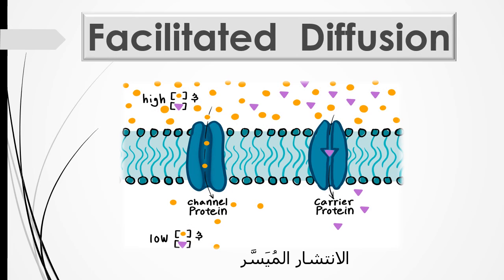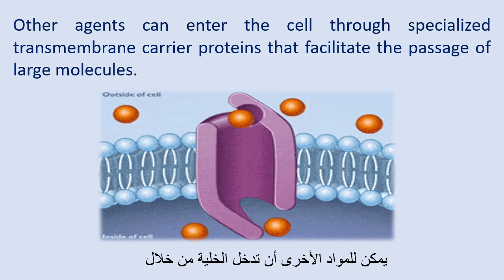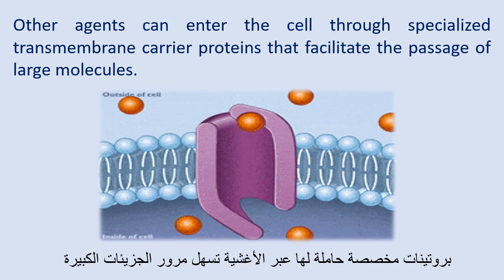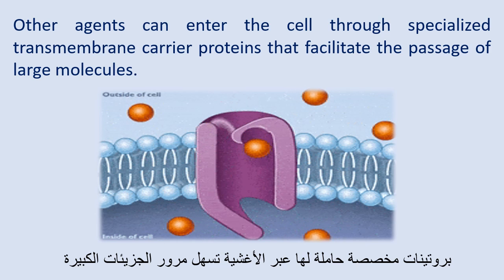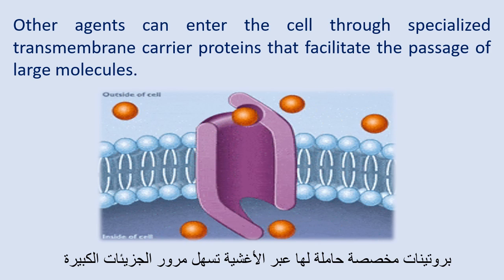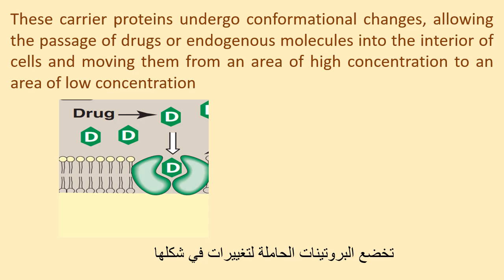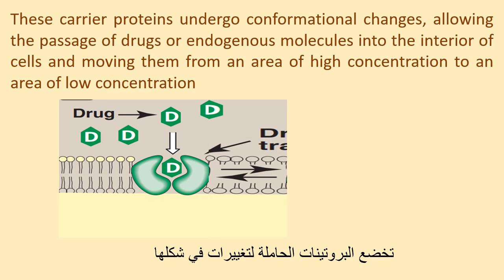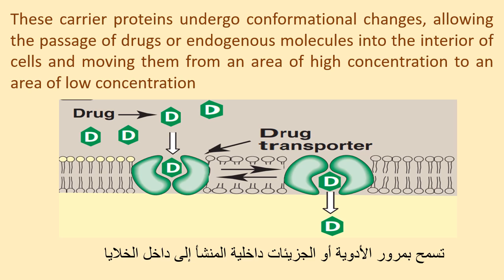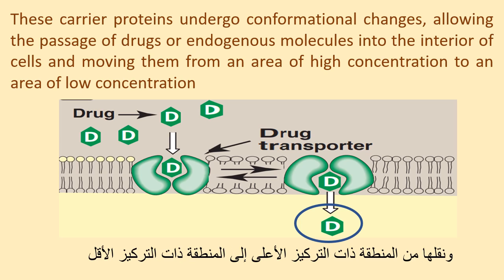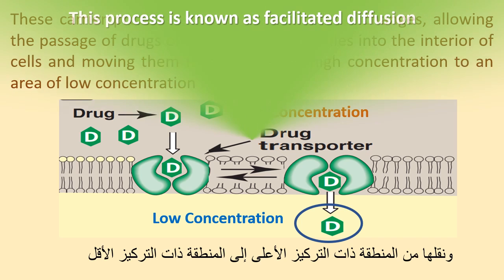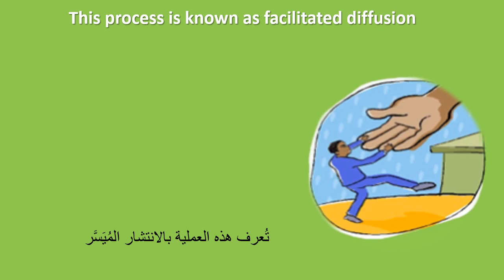Facilitated diffusion. Other agents can enter the cell through specialized transmembrane carrier proteins that facilitate the passage of large molecules. These carrier proteins undergo conformational changes, allowing the passage of drugs or endogenous molecules into the interior of cells, moving them from an area of high concentration to an area of low concentration. This process is known as facilitated diffusion.